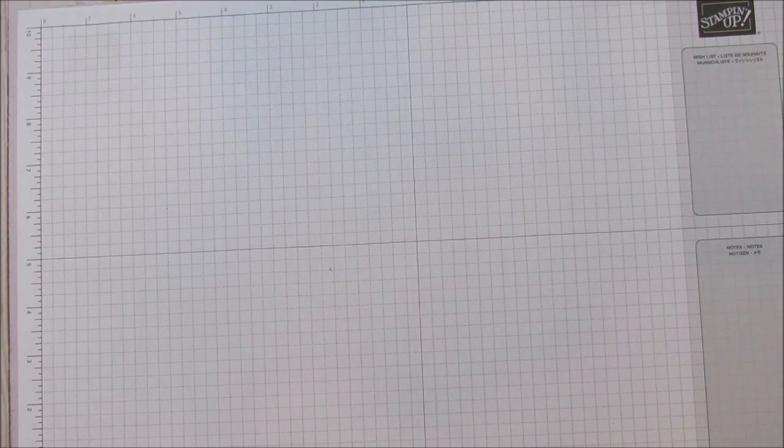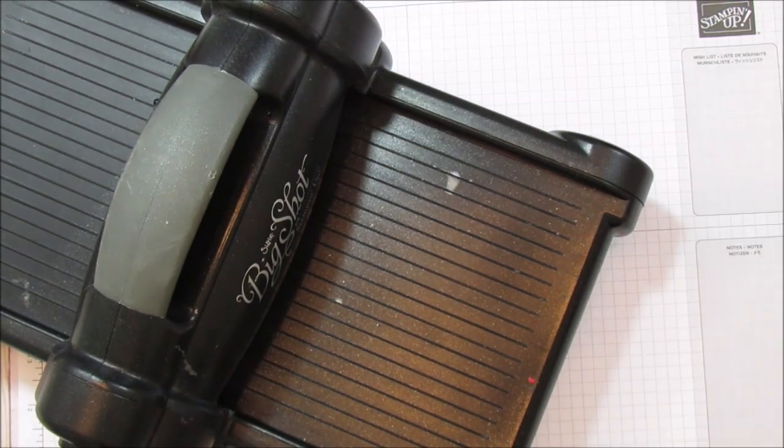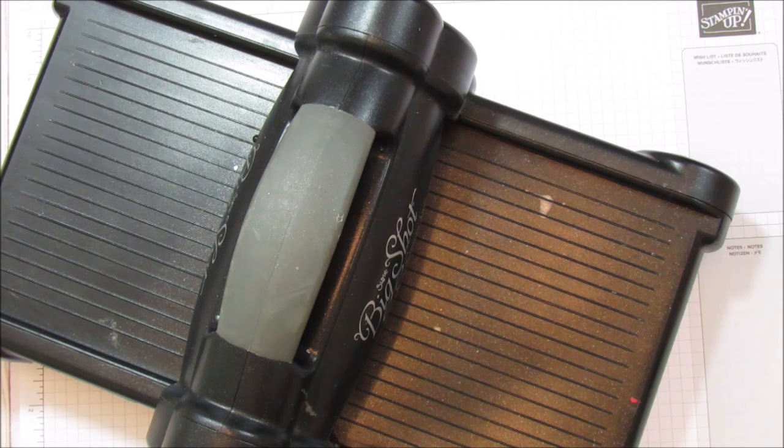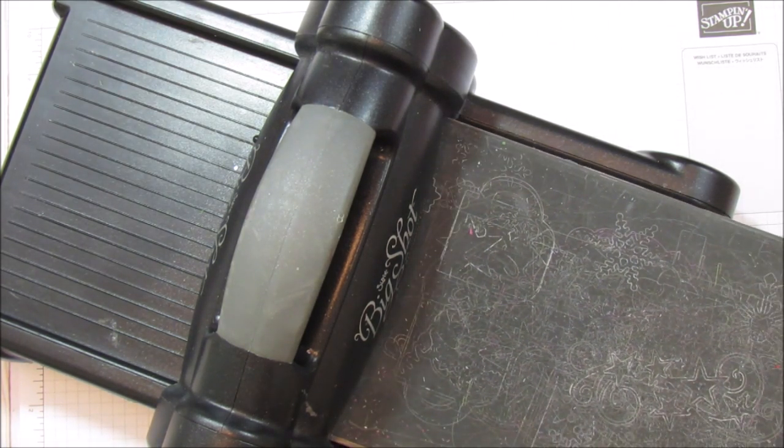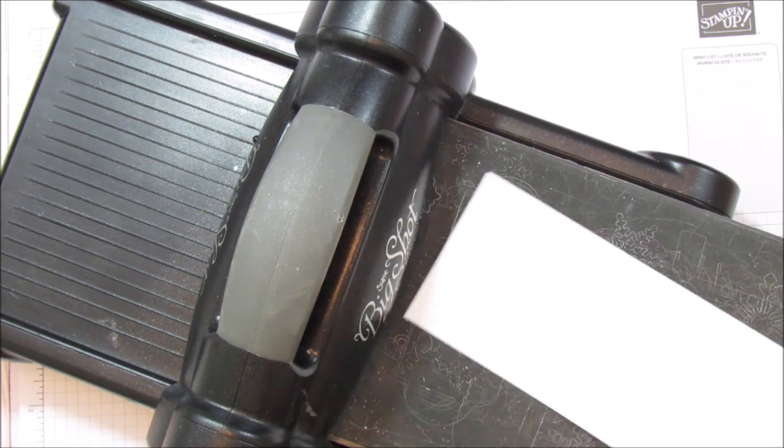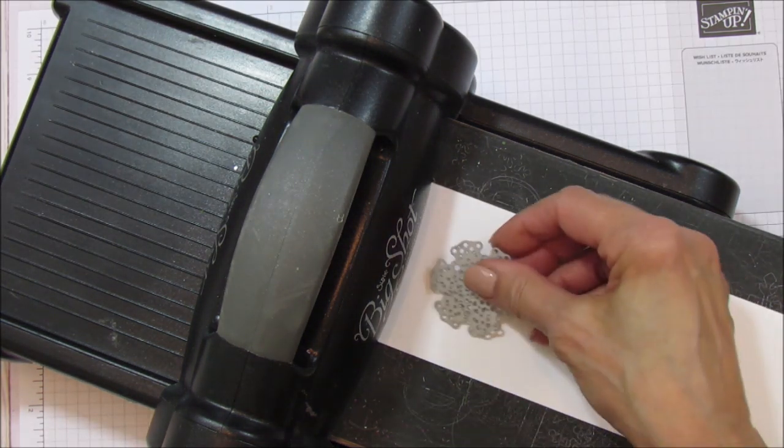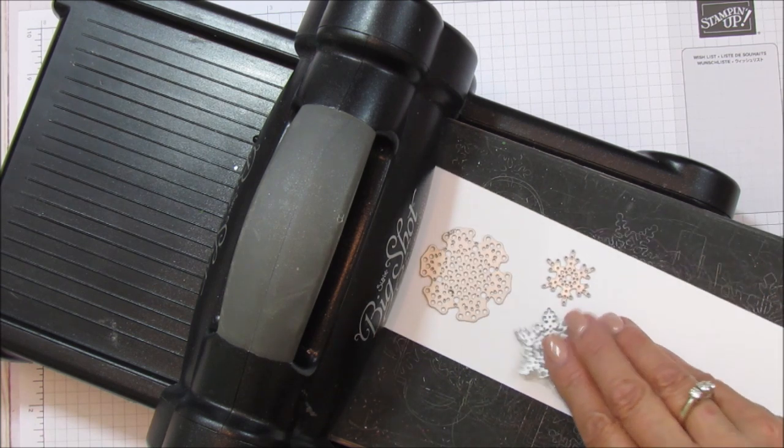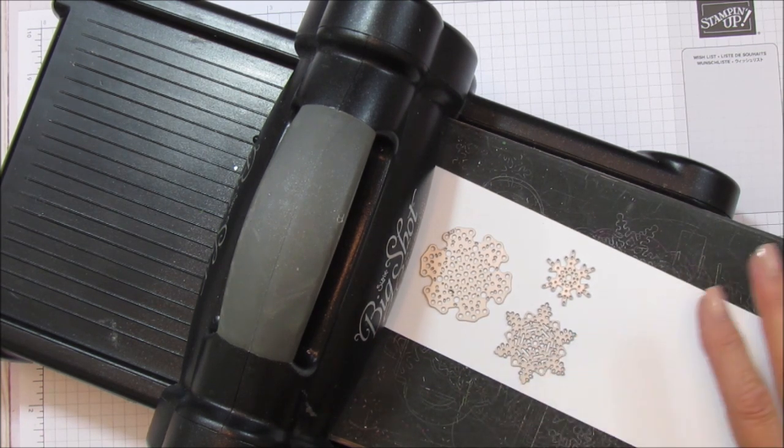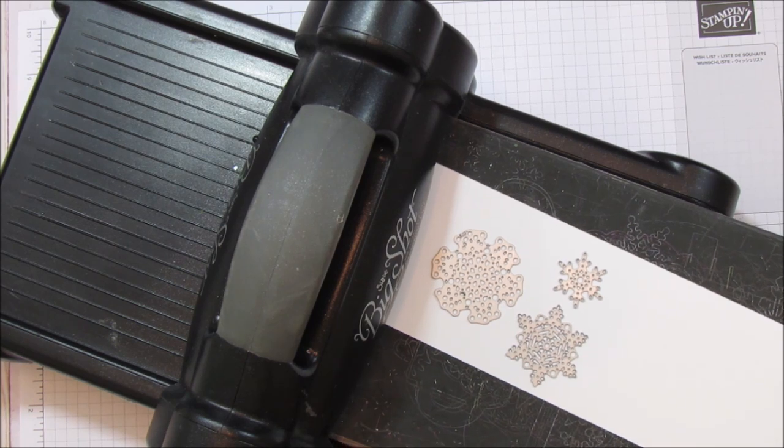We're going to bring the big shot up here and I think the first thing we'll do is cut out our snowflakes. I'm using the precision platform for this because these are very fine, there's a lot of detail in these snowflakes. So we're going to just go ahead and cut all three of these out at one time.